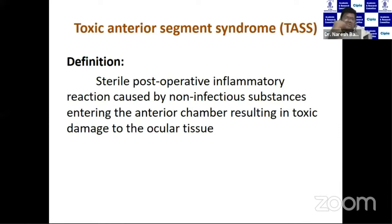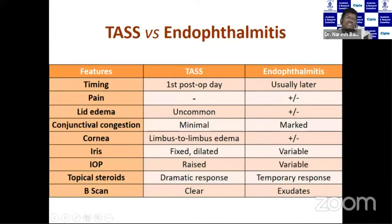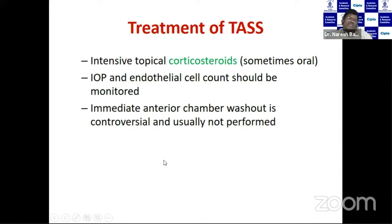The most important differential is TASS — toxic anterior segment syndrome — defined as a sterile post-operative inflammatory reaction caused by non-infectious substances entering the anterior chamber, resulting in toxic damage to the ocular tissue. To differentiate: if onset is less than 24 hours, there is limbus-to-limbus corneal edema, iris is fixed and dilated, IOP is raised with very minimal vitreous exudates, think TASS. Untreated TASS can cause permanent corneal decompensation, intractable glaucoma, and cystoid macular edema. Treatment is corticosteroids, IOP management, and endothelial count monitoring.